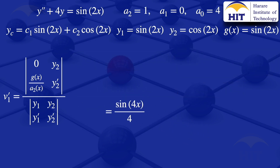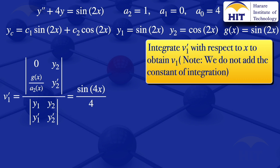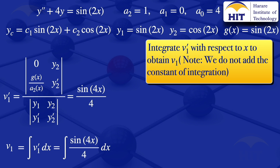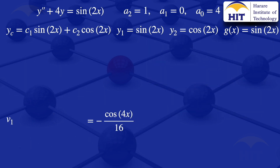Since V1' is a derivative and we want the function V1, we integrate. We do not add the constant of integration. So V1 = ∫V1' dx = ∫sin(4x)/4 dx. Using the rule ∫sin(Ax) dx = -cos(Ax)/A, we get V1 = -cos(4x)/16.